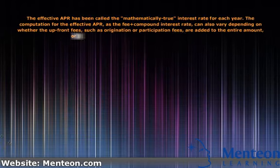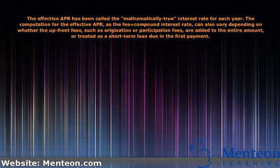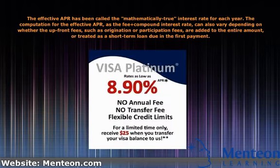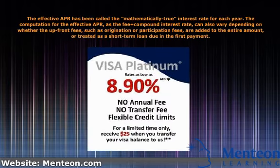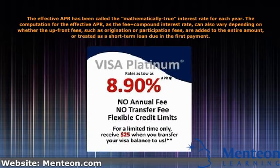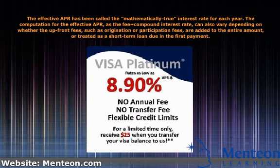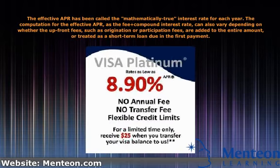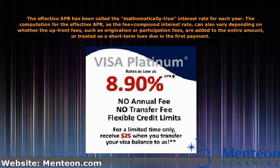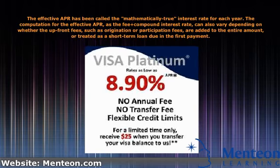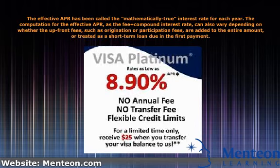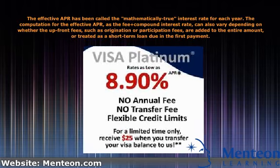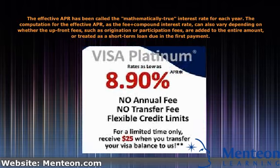The effective APR has been called the mathematically true interest rate for each year. The computation for the effective APR, as the fee plus compound interest rate, can also vary depending on whether the upfront fees, such as origination or participation fees, are added to the entire amount, or treated as a short-term loan due in the first payment.